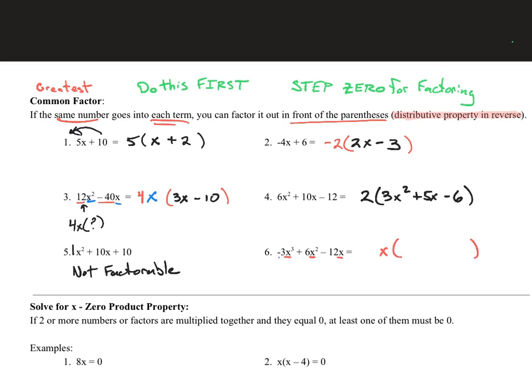Then you also have to think about your numbers separately. So you have negative 3, a positive 6, and a negative 12. And again, since I start with a negative, I'm going to pull a negative out. And 3 goes into all three of those numbers. So my greatest common factor is a negative 3x.